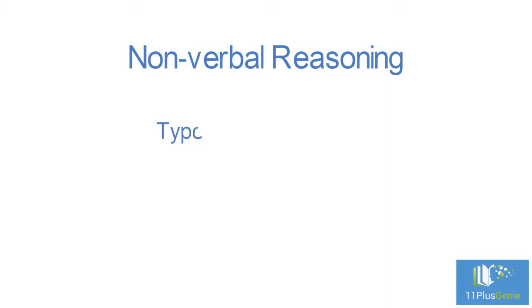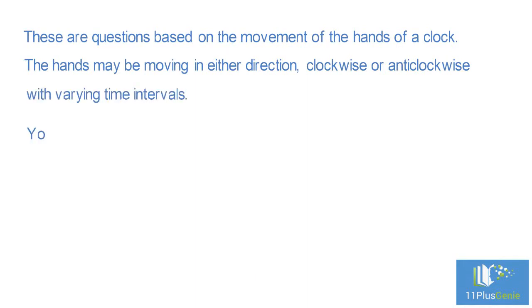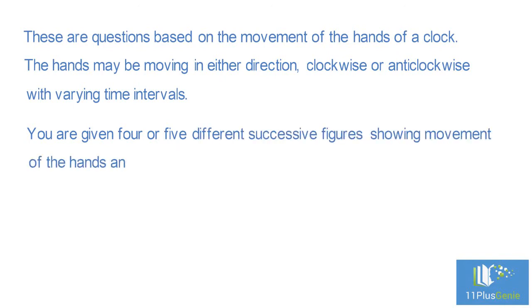Non-verbal reasoning type 18: Clock Movement. These are questions based on the movement of the hands of a clock. The hands may be moving in either direction, clockwise or anti-clockwise, with varying time intervals. You are given four or five different successive figures showing movement of the hands and are asked to determine the next position.